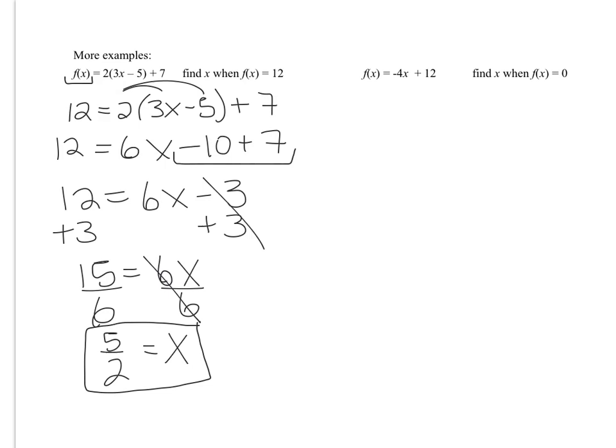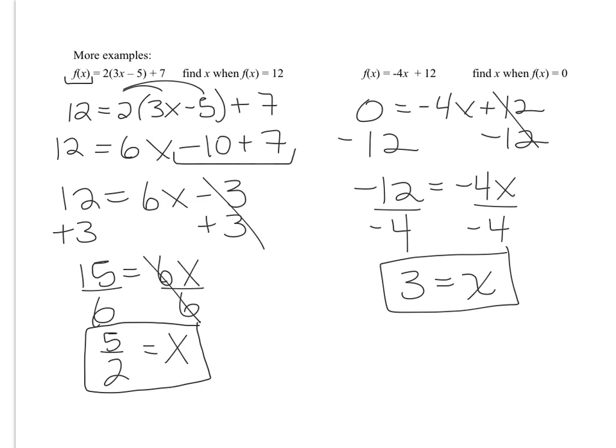Go ahead and stop the video and do the next one on your own. Really stop it. So now here's my work for this problem. I'm asking you here to find the value of x when f of x is equal to 0. So 0 is my output. Notice where it is. I don't have an x in there. So I'm asking you to replace that entire notation with the number 0. And then you work backwards to solve the equation. And you get x equals 3. If you didn't get x equals 3, look at my work and see if you can figure it out.